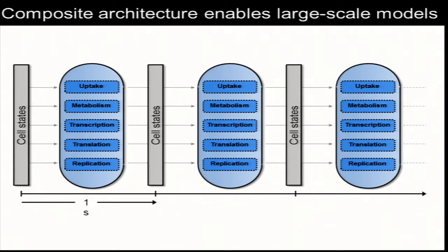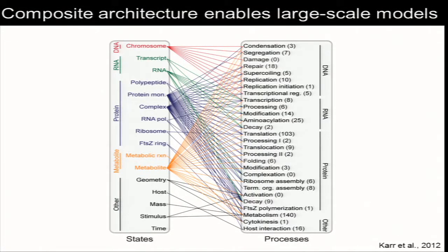Overall, it's roughly analogous to an ODE integrator where we've replaced your state variables with this more complicated data structure and replaced the differential equations with these submodels. In our most recent model of Mycoplasma genitalium, we've had models of 28 different cellular processes.